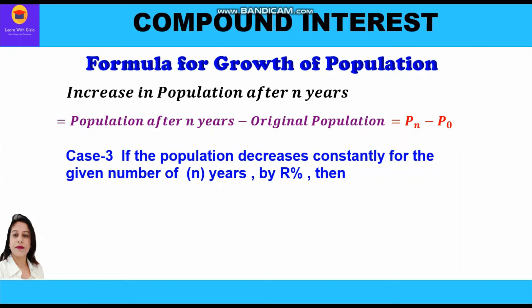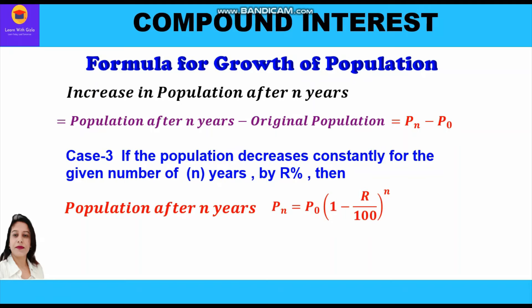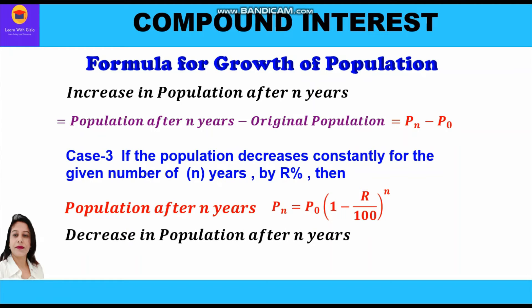Case three: if the population decreases constantly for the given number of years by r percent, then the formula is Pn = P0 × (1 − r/100)^n, where Pn is the population after n years, P0 is the initial population, r is the rate of decrease, and n is the number of years. Here we use a minus sign in place of the plus sign used for growth.